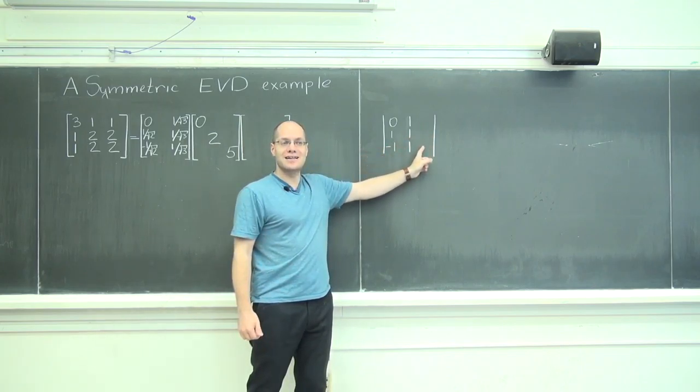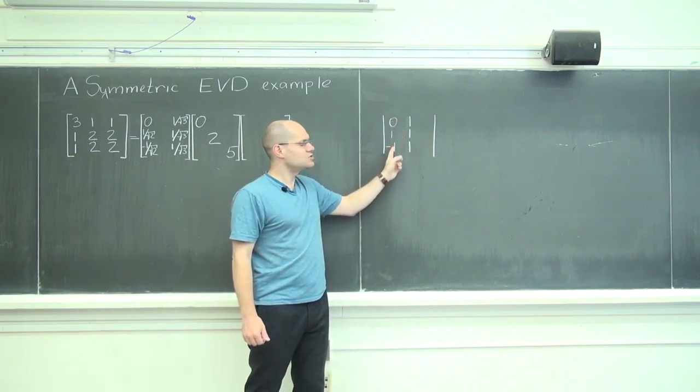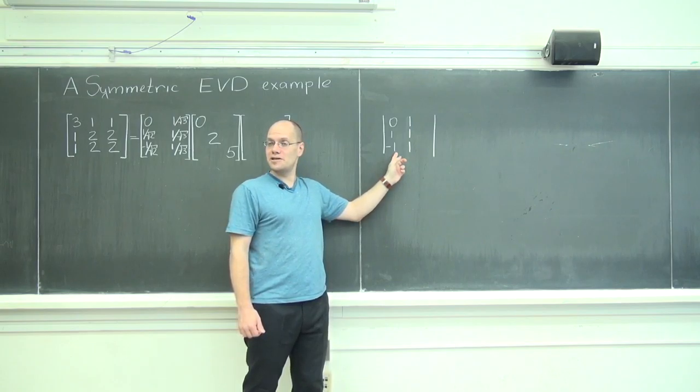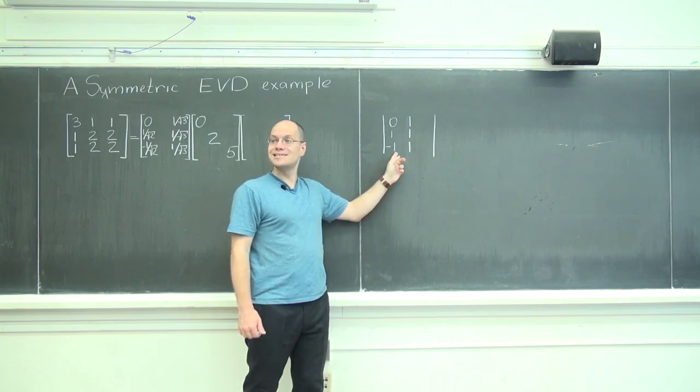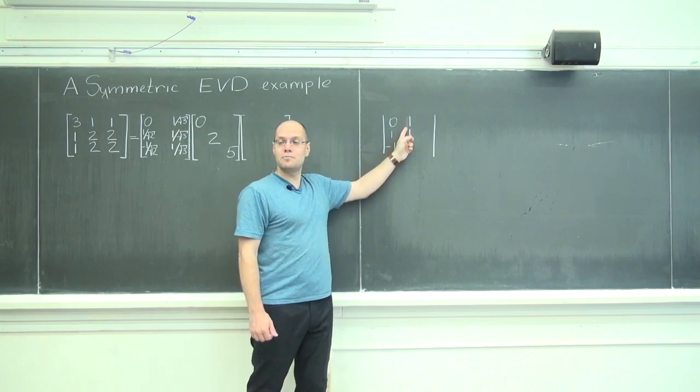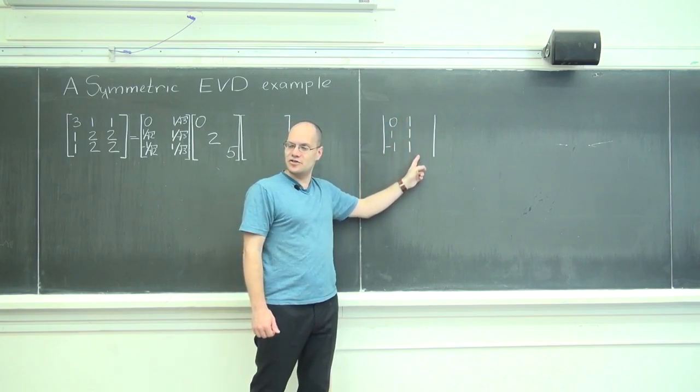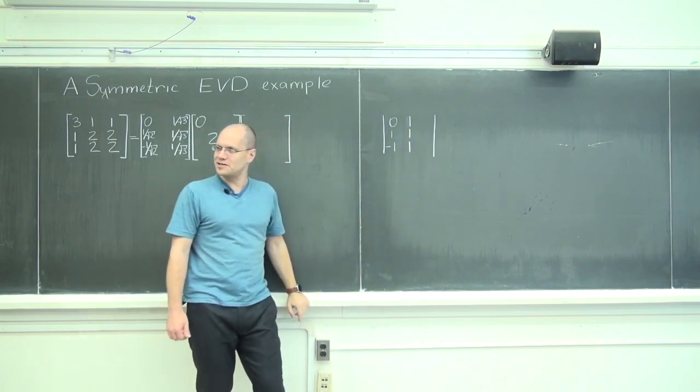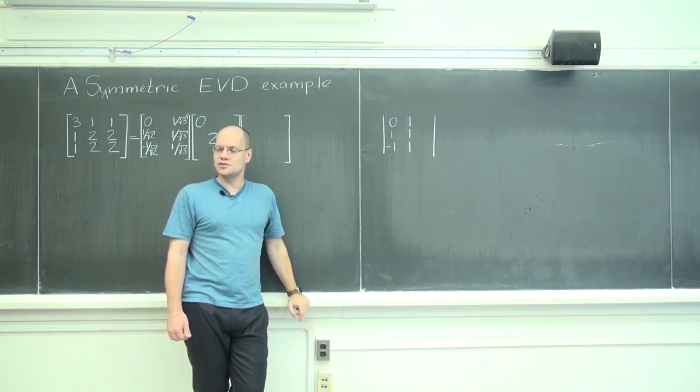If I made the third column equal to the first column, what would the determinant be? Zero. If I repeated the second column as the third column, what would the determinant be? Also zero.